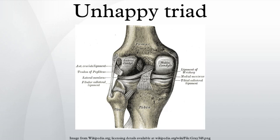Originally the unhappy triad included the medial meniscus and not the lateral meniscus. However, during the 1990s, analysis indicated that the classic Adenogat triad is actually an unusual clinical entity among athletes with knee injuries. Some authors mistakenly believe that in this type of injury, acute tears of the medial meniscus always present with a concomitant lateral meniscus injury. This is definitely not true.